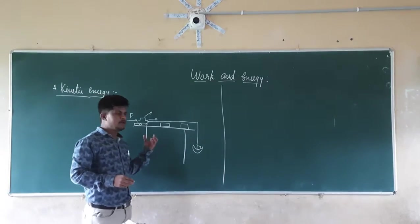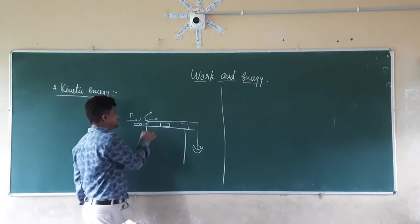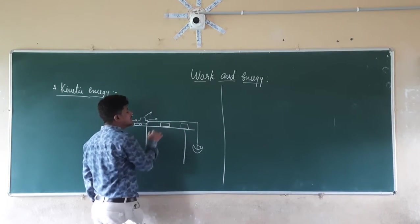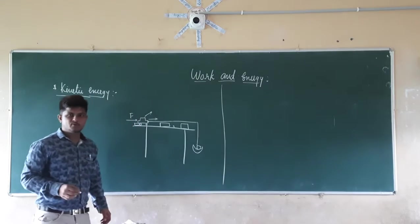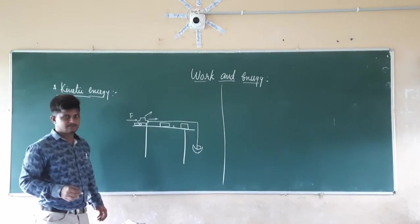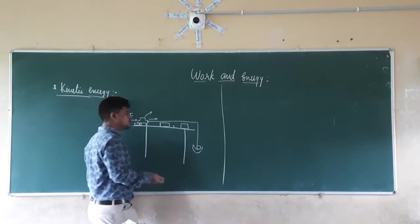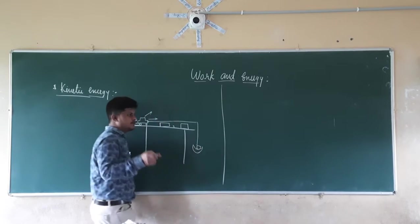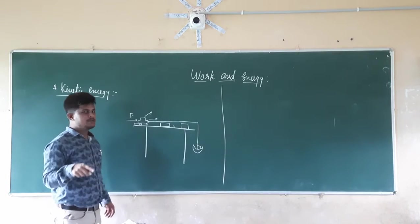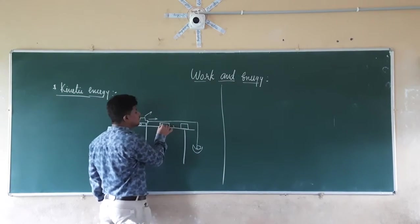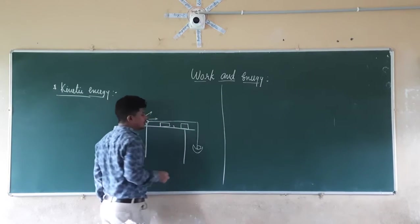When the weight increases, the speed of the car increases. As the speed of the car increases, it moves the wooden block up to some distance. Adding more weight increases the speed further, and this time the car moves not just the first wooden block but the second wooden block along with it.